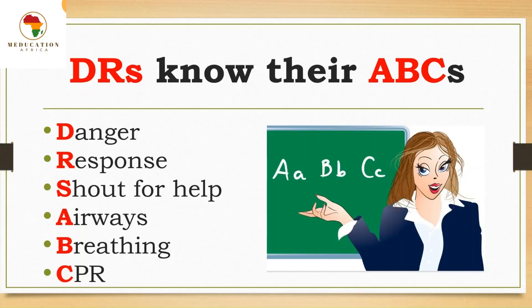So in summary, if you find someone who's unconscious, you can remember what to do with this mnemonic: Doctors know their ABCs — where D is for danger, R is for response, S is shout for help, A is for airways, B is for breathing, and C is for CPR. Remember, in a situation like this, every second counts and your actions can make a difference. It can even save somebody's life.